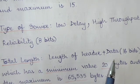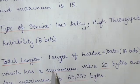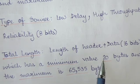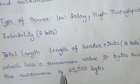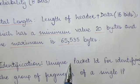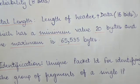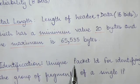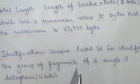The total length field represents the length of the header plus the data. This is 16 bits, with a minimum value of 20 bytes and a maximum of 65,535 bytes. The identification field is a unique packet ID for identifying the group of fragments of a single IP datagram. Since a single datagram is fragmented into smaller units, each fragment of that datagram is assigned a unique ID. Sixteen bits are used to represent the identification field.